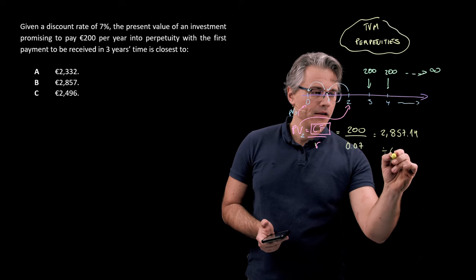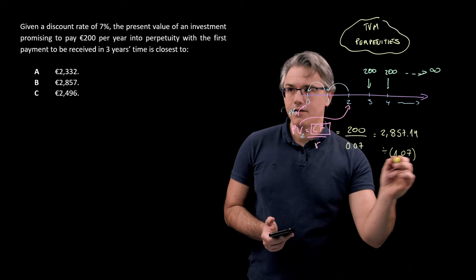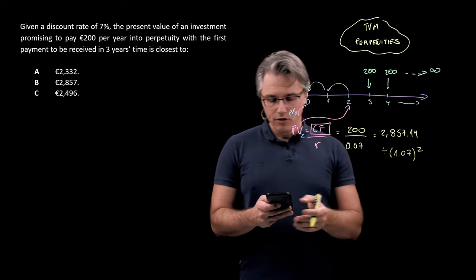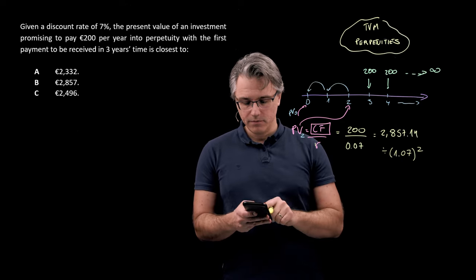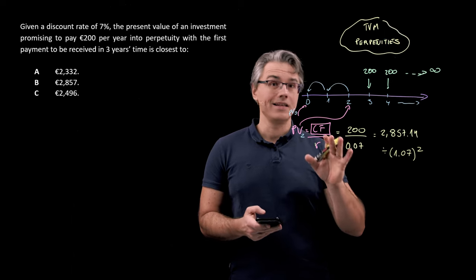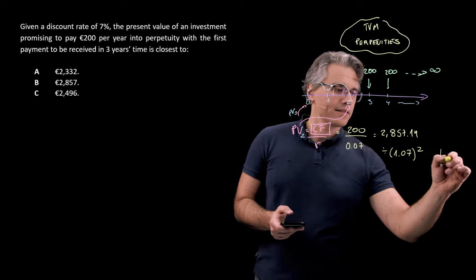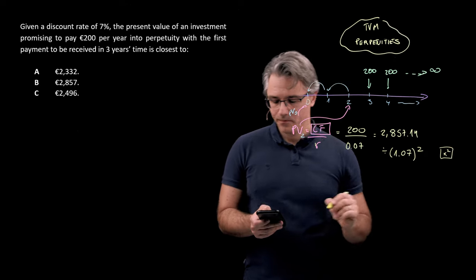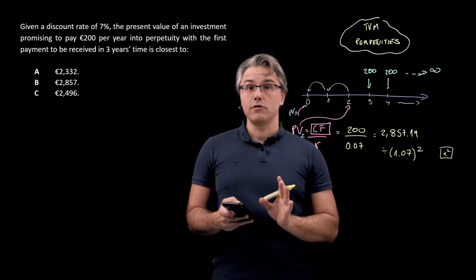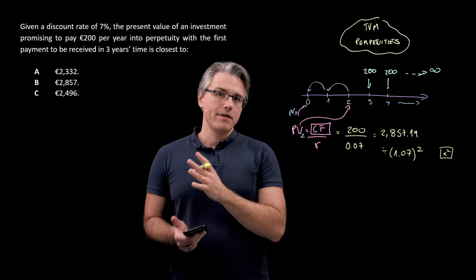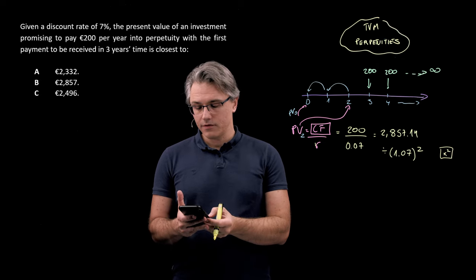So divide by a factor of 1.07. That's basically one plus the interest rate to the power of two. On my calculator, divide by 1.07 and raise this to the power of two by pressing the x squared key. This assumes you've got your calculator set up to handle such problems using the AOS method instead of the chain.